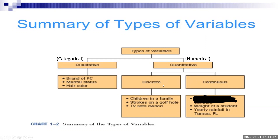From the examples in the chart, you can see what makes the difference between discrete and continuous. Discrete variables include things like the number of children in a family, the number of strokes on a golf hole, the number of TV sets a person owns — you keep saying 'the number of.' A discrete variable always gives you a whole number when you measure it. With a continuous variable, like the weight of students at City College, the value you get might be a fraction.